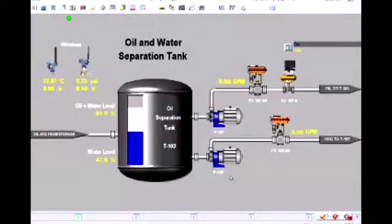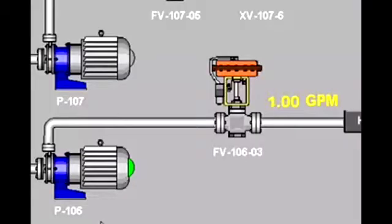What we're going to do now is start up this flow loop and circulate water between these two tanks. Now we can hear the pump starting and see the flow increasing. It's stabilizing around one gallon per minute, which is the set point.